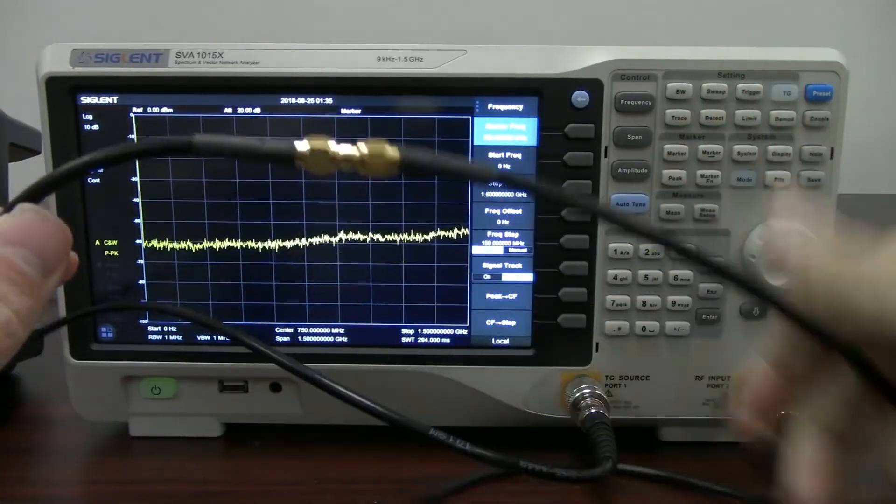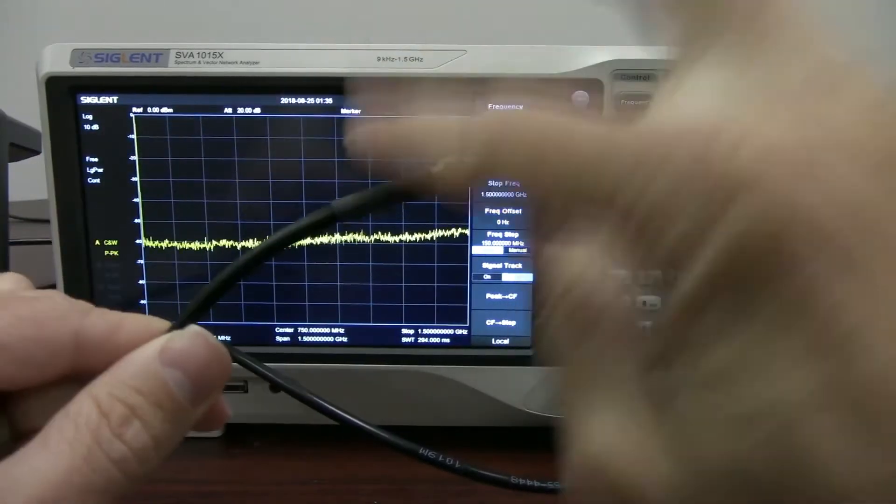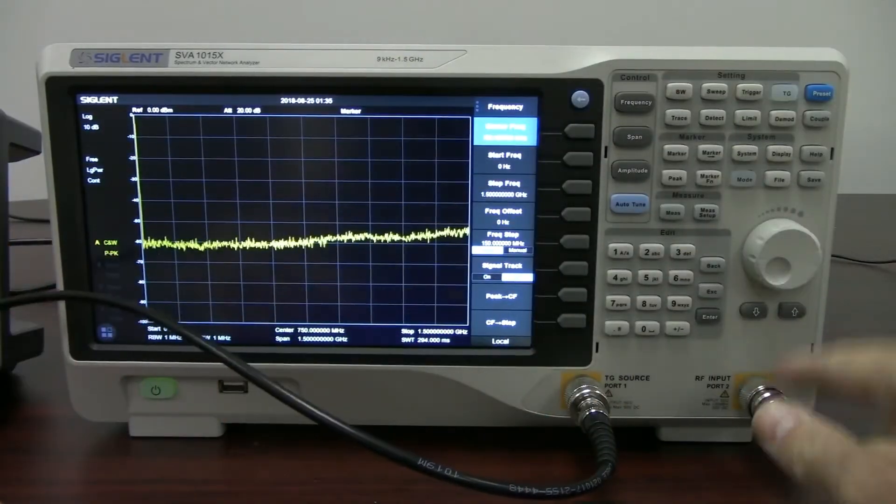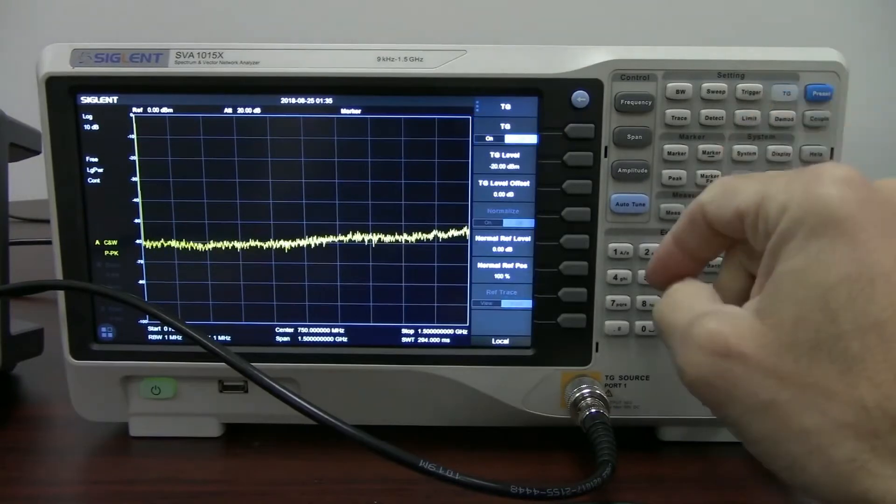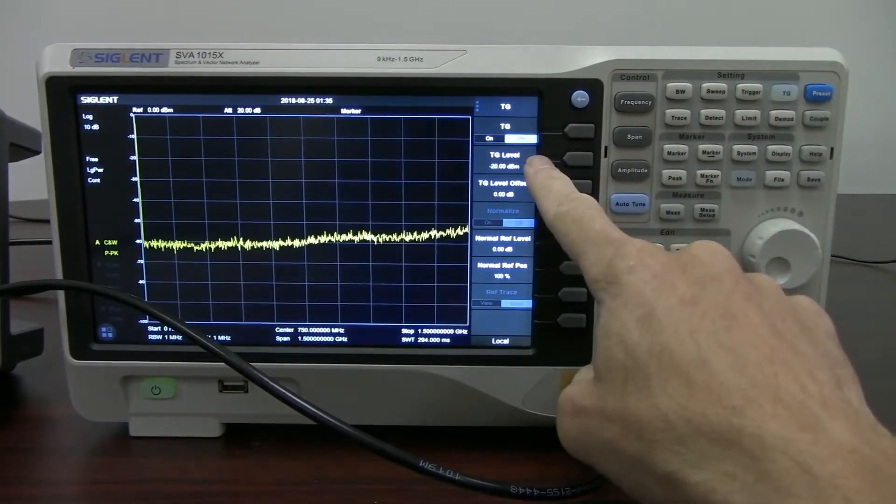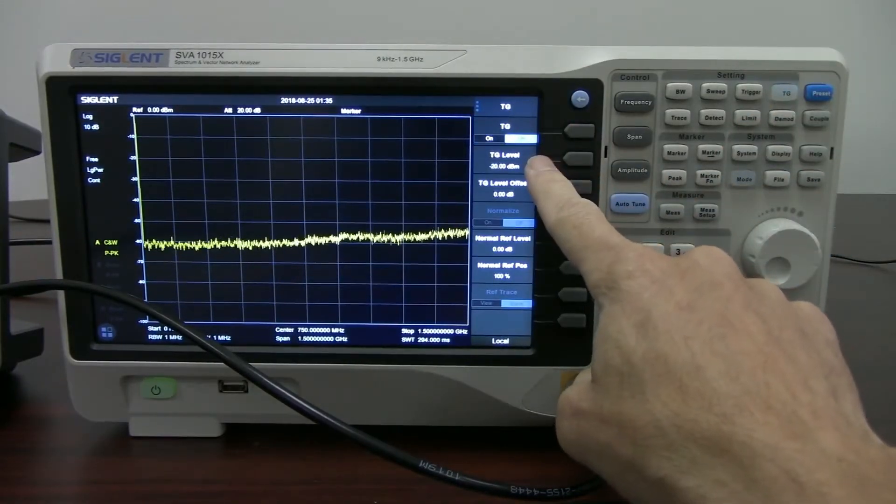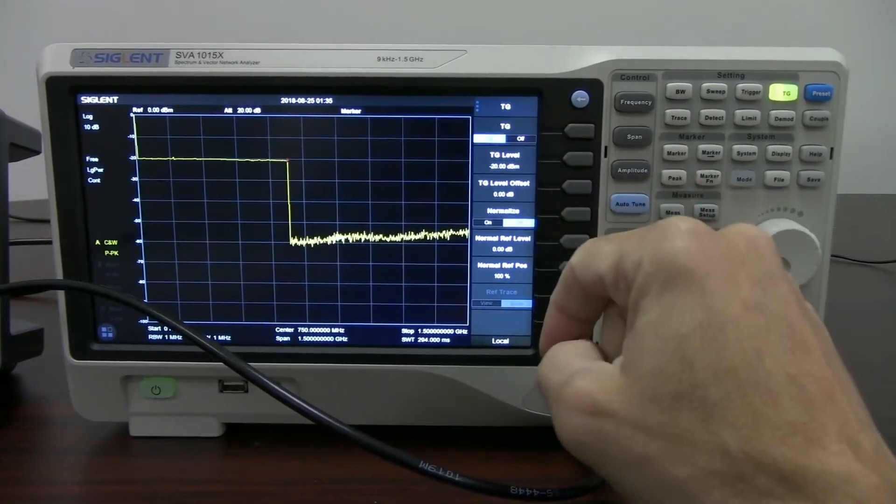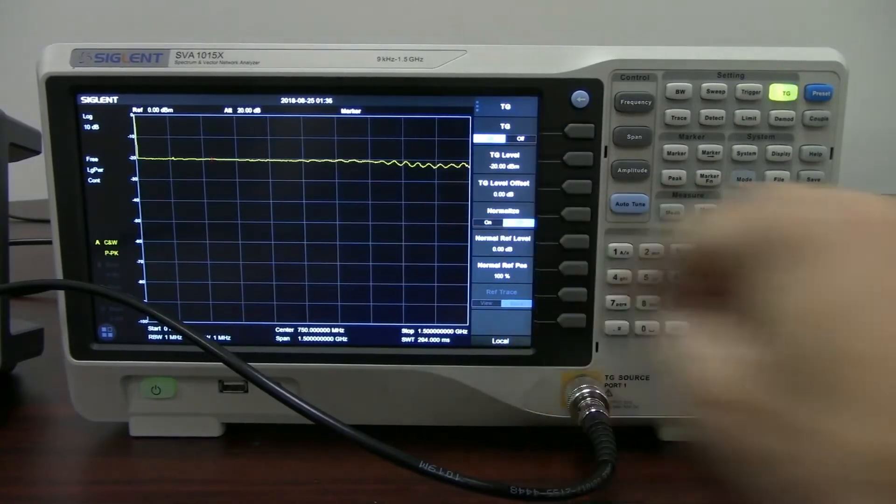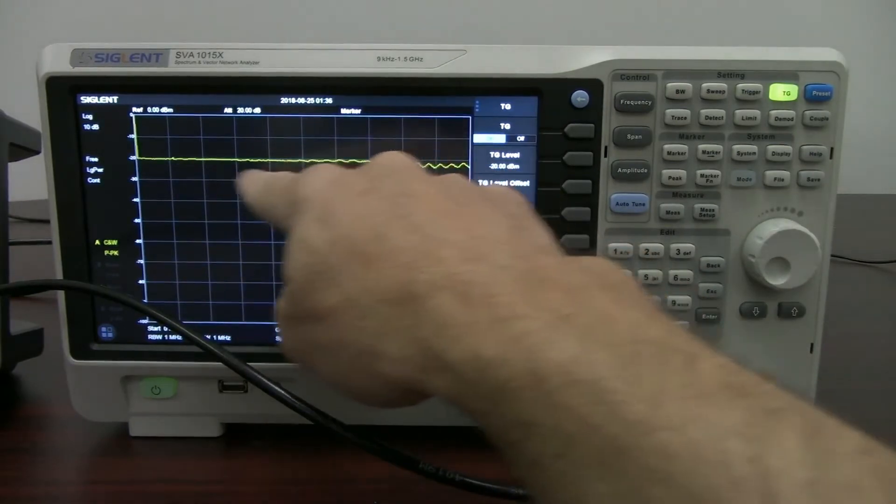So the signal should come out through this cable, come back in or go through the adapter to the other cable, to the RF input, and we're going to turn on the tracking generator. And you'll see that the tracking generator level is set to minus 20 dBm. So when we turn on the tracking generator, lo and behold, we've got a line right here coming across about minus 20 dBm.